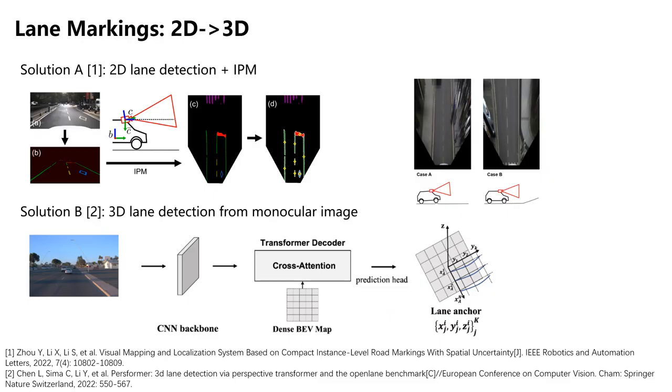However, unlike points, curves are challenging to triangulate and determine their 3D positions. The first commonly used approach is to combine 2D detection and inverse perspective mapping, IPM, to project the curves onto the ground plane. However, this heavily relies on the planar assumption and fails when the vehicle experiences jitter or shaking.